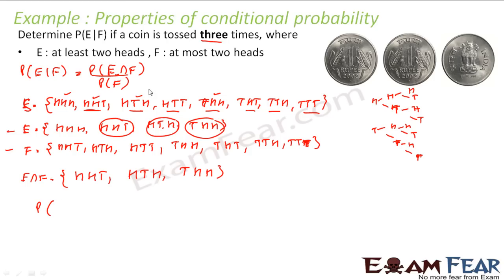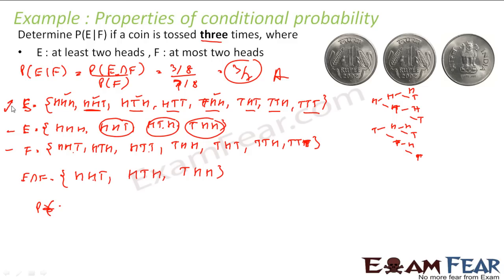Probability of E intersection F is 3 by 8, since there are 3 elements out of 8 total. Probability of F is 7 by 8, since F has 7 elements. So P(E|F) = (3/8) divided by (7/8) = 3/7, and that is my answer. Using the formula I can easily find the conditional probability: find the sample space, find E, find F, find E intersection F, then compute the ratio.